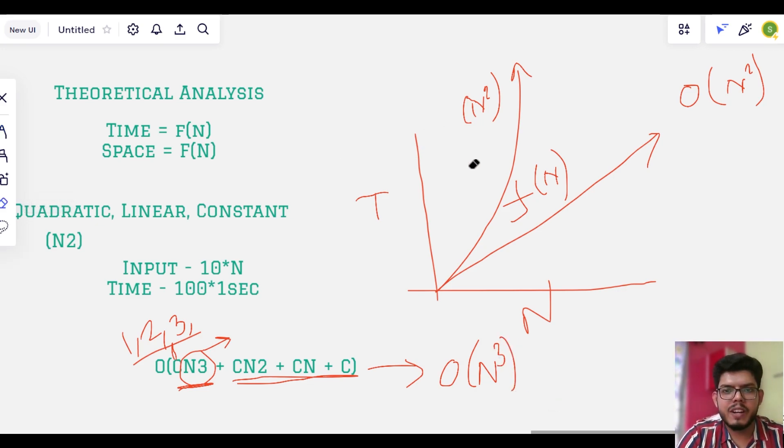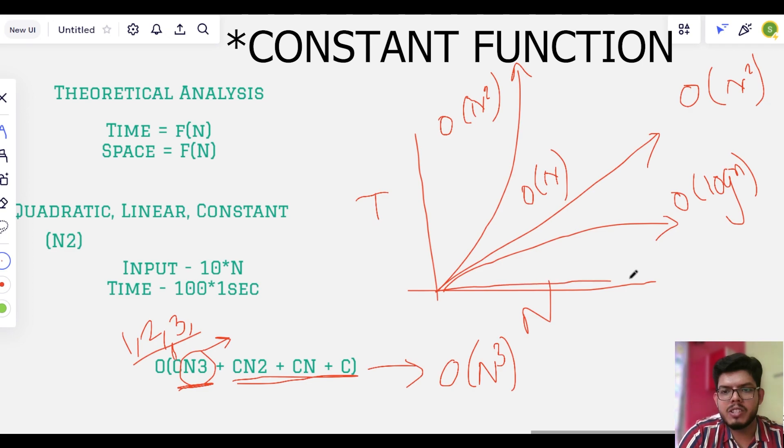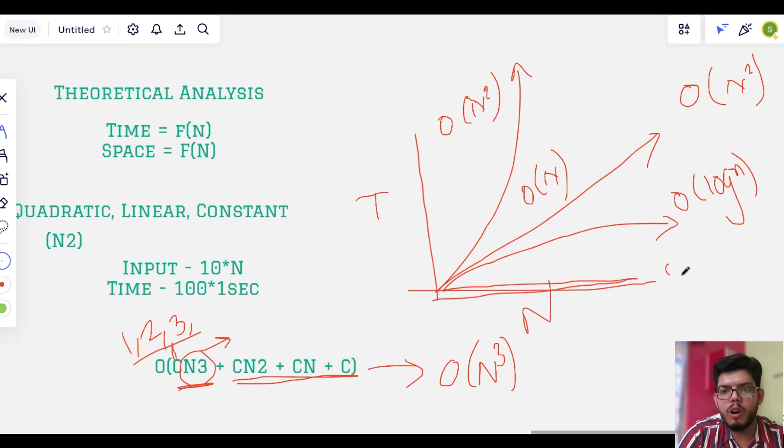So now instead of this function, we can write them as Big O. This will be the quadratic function, Big O n squared. This will be the linear function, Big O of n. This will be the logarithmic function, that is Big O of log n. And there will be a constant function as well, that is Big O of 1.